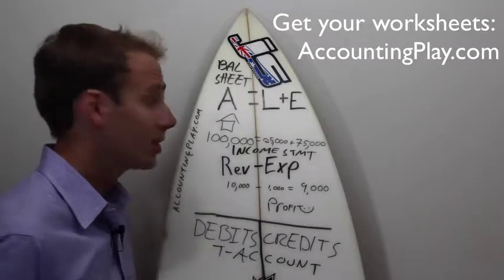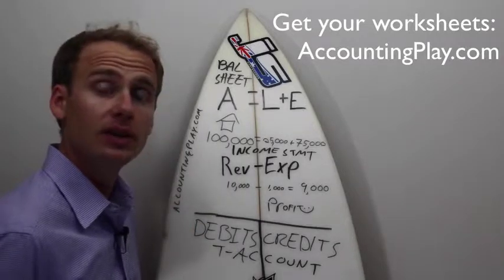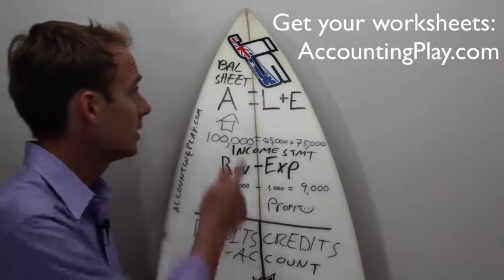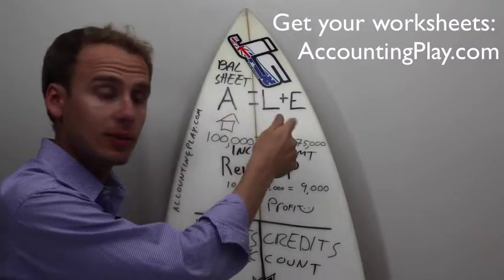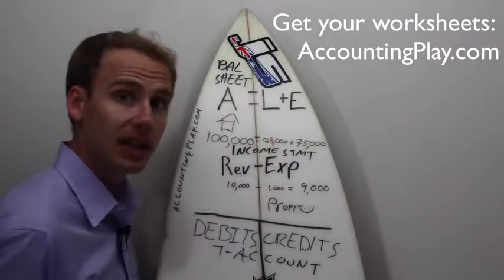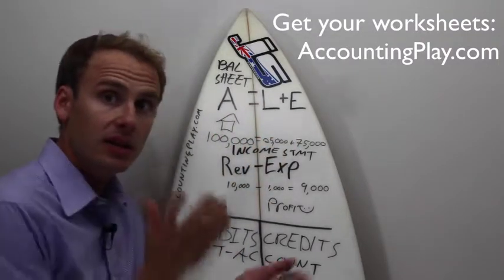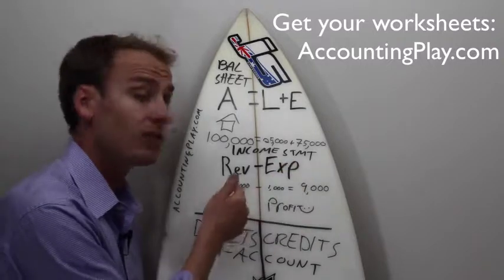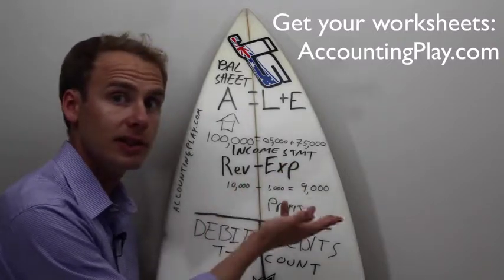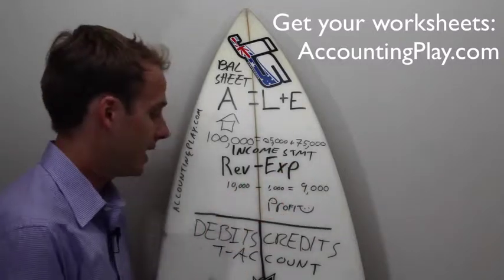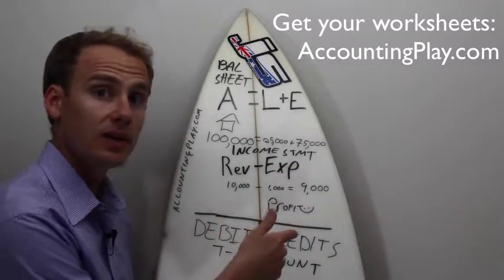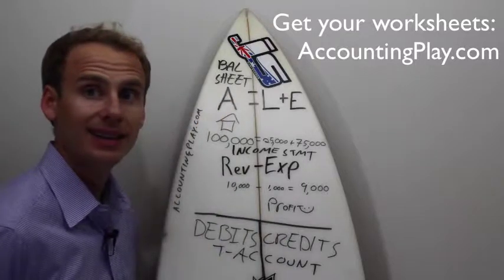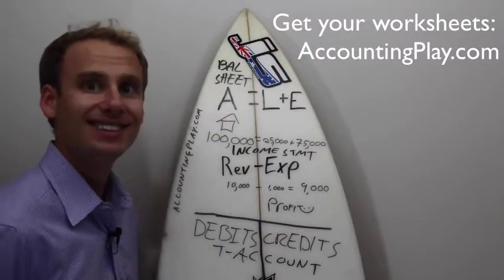So, next lesson, we're going to be right on to the asset T-account transactions. Assets equals liabilities plus equity, forming your balance sheet — always in balance. Income statement: revenue minus expense. Debits on the left, credits on the right. Balance sheet, so tight. Stay tuned. Thank you.